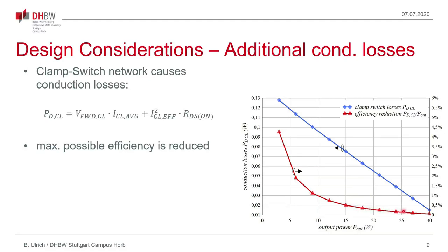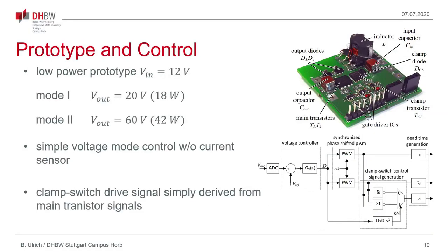To validate the proposed operating principle a low power prototype with 12 volt input voltage was built which is shown on the right side and operated in both modes. Therefore in mode one with an output voltage of 20 volts and in mode two with an output voltage of 60 volts which is more than four times this input voltage.